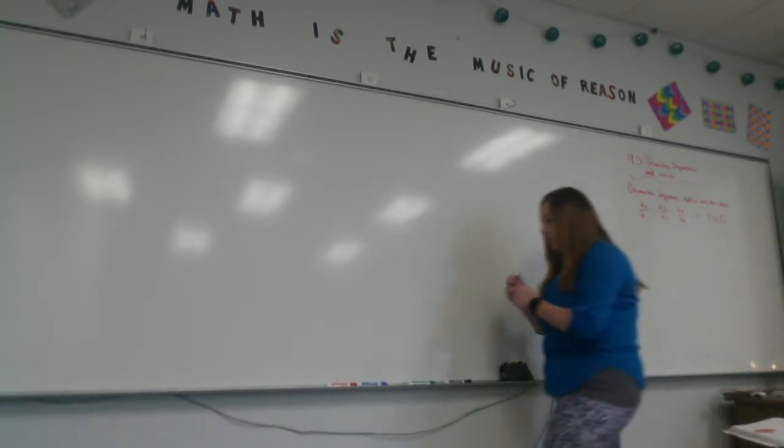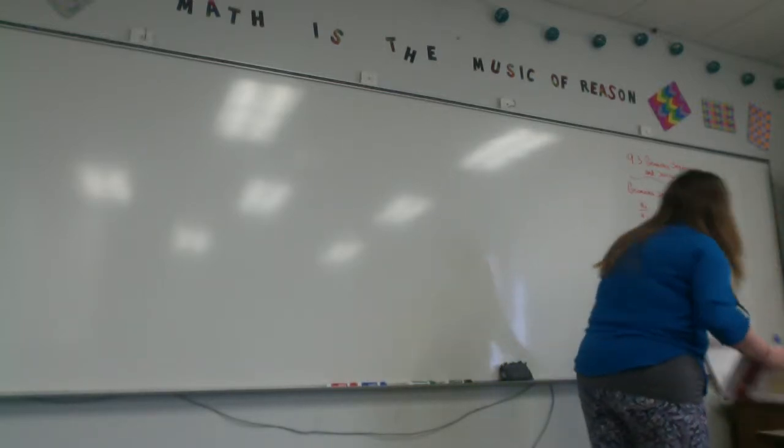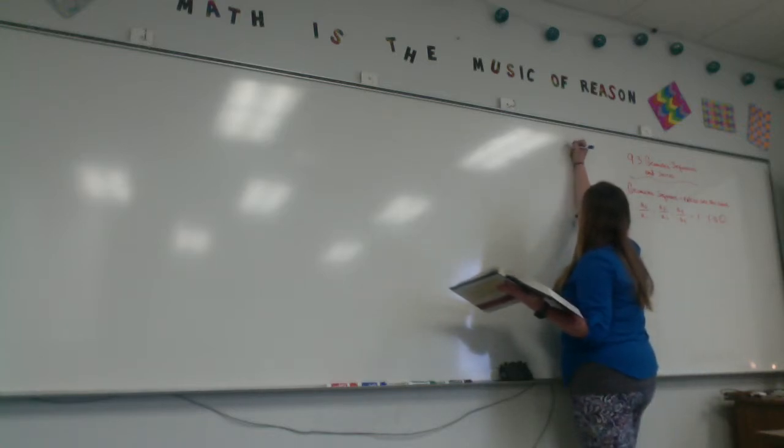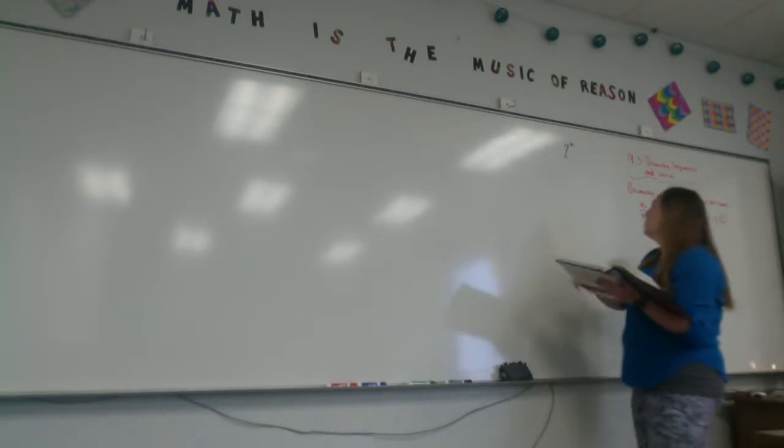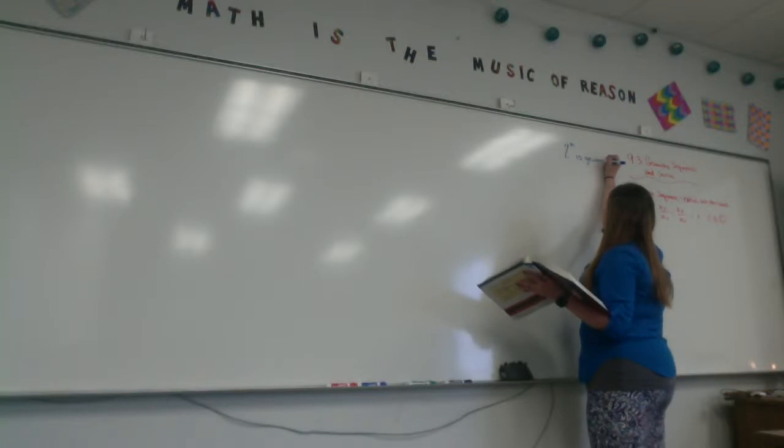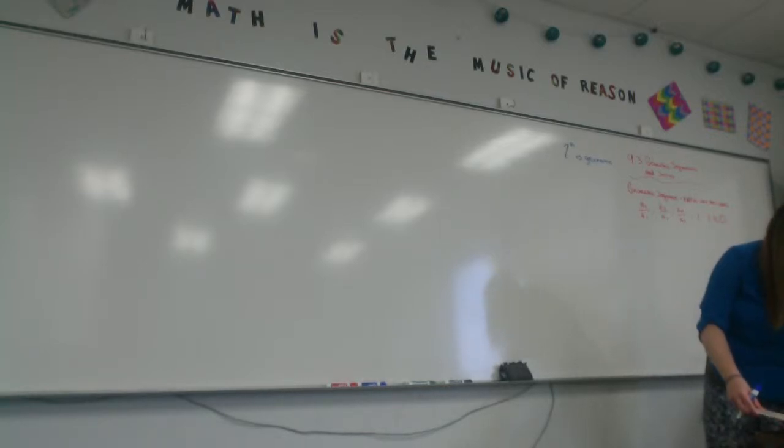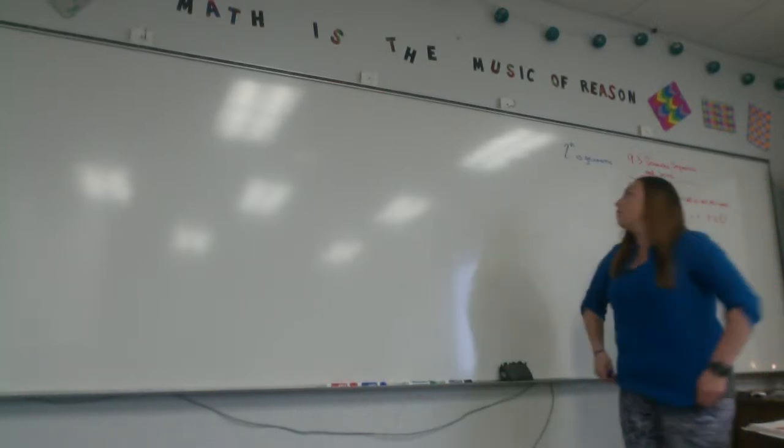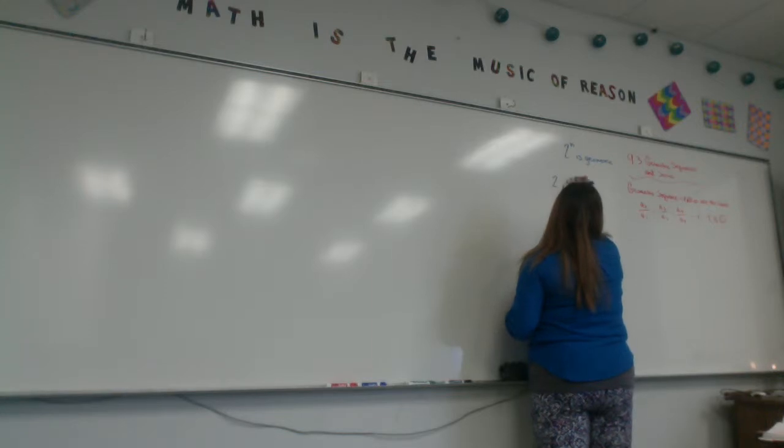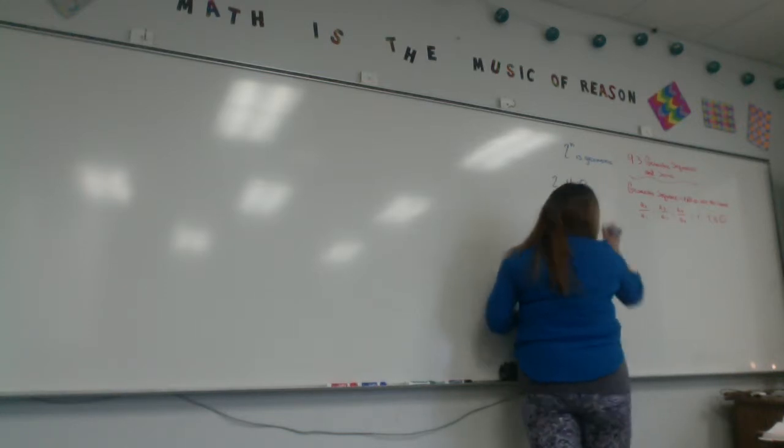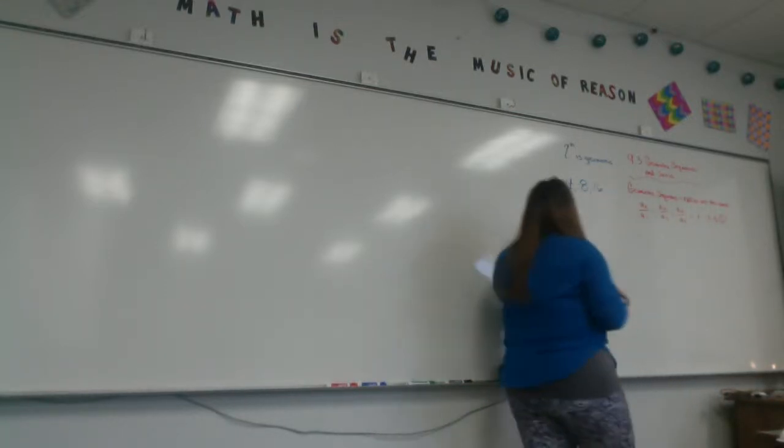If they want a sequence whose nth term is 2 to the n, the sequence whose nth term is 2 to the n is geometric. For this sequence, the common ratio between consecutive terms is what? What would be my common sequence if I had the numbers 2, 4, 8, 16?